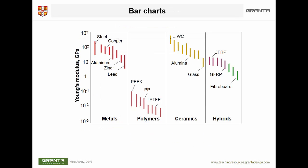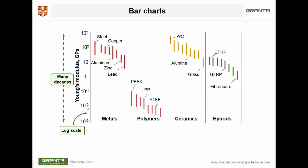Here's the simplest of all possible visualizations of material data: a bar chart showing Young's Modulus for metals, polymers, ceramics, and hybrids — composites, foams, and materials like fiberboard. The range of the scales is very wide because a property like Young's Modulus spans about six decades, a factor of a million between the smallest and the largest. For that reason, most of these charts use logarithmic scales, because that's the only way to get a factor of a million onto one axis.